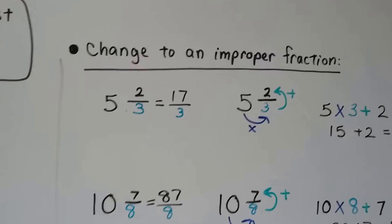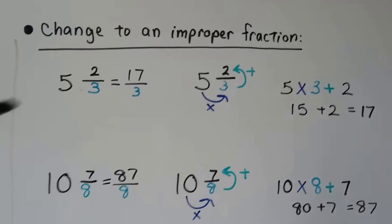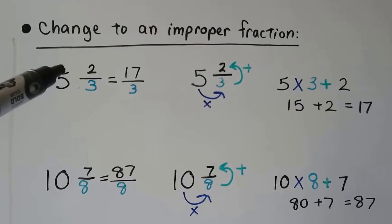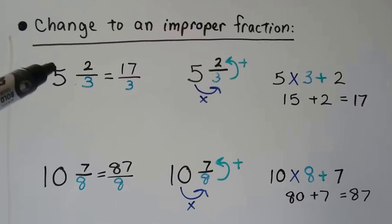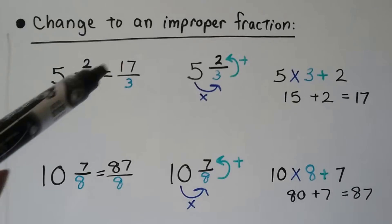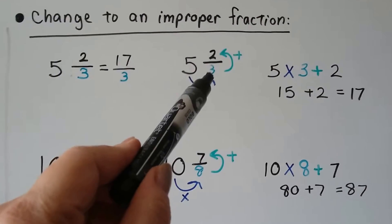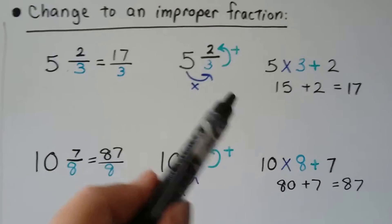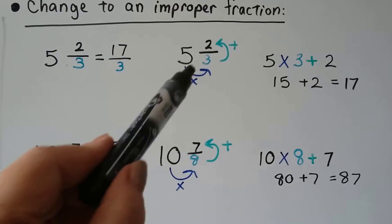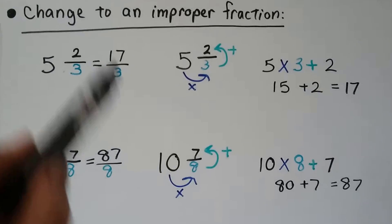So if it says change to an improper fraction, what we're going to do is we're going to do our little counterclockwise circle. 5 and 2 thirds is equal to 17 thirds. We do 5 times 3 which is 15 and then we add the 2 and get a 17 and then we use that denominator. So it's 17 thirds.